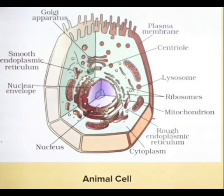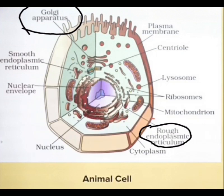Now let us talk about the Golgi apparatus. The Golgi apparatus helps in the transportation of proteins from the rough endoplasmic reticulum. The protein comes to the Golgi apparatus, where it is packed and sent to various parts of the cell.